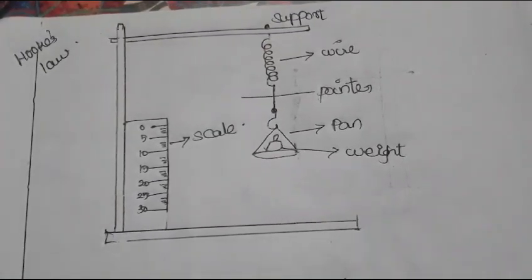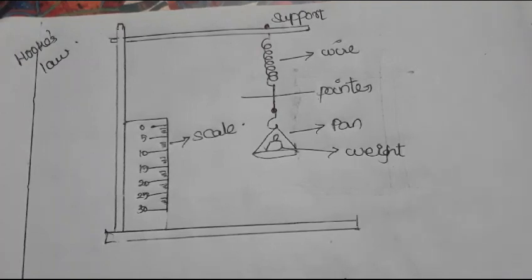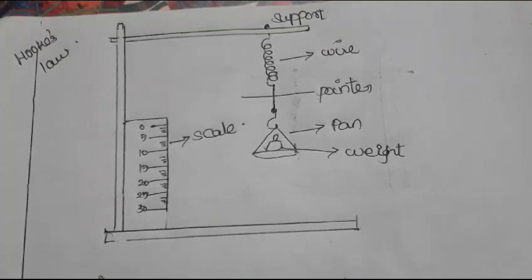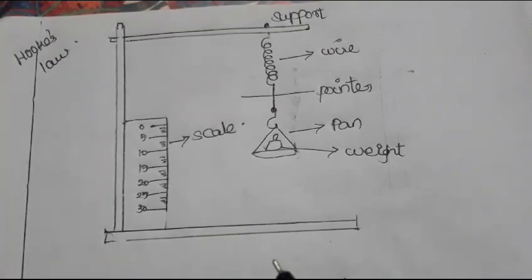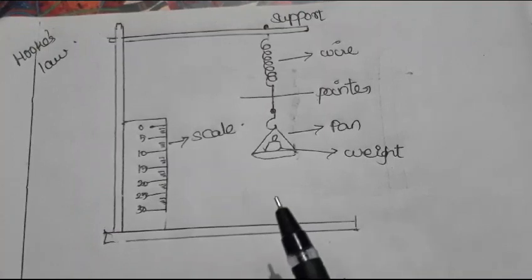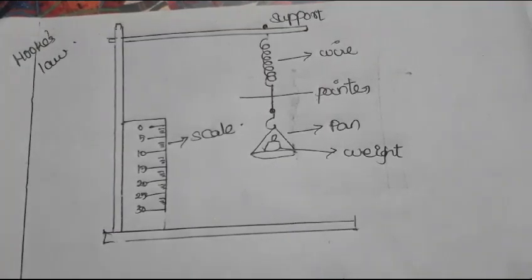Good morning friends. 11th standard, second volume, 7th unit, Properties of Matter. An important question: state Hooke's Law and verify it with the help of an experiment. Hooke's Law states that for a small deformation within the elastic limit, the strain produced in the body is directly proportional to the stress that produces it.